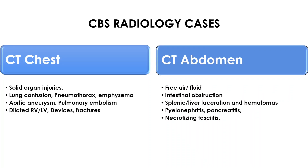In CT images of the chest and abdomen, they can ask about solid organ injuries in polytrauma, lung contusions, pneumothorax, surgical emphysema, aortic aneurysm, pulmonary embolism with dilated RV or LV, devices and fractures, free air and fluid under the diaphragm, intestinal obstruction, splenic and liver laceration and hematomas, pyelonephritis, pancreatitis, and sometimes necrotizing fasciitis.